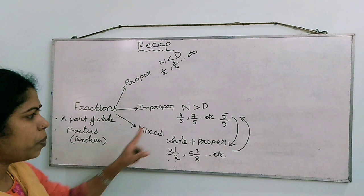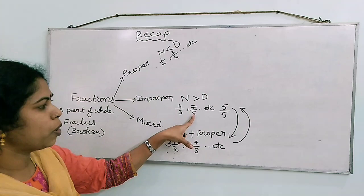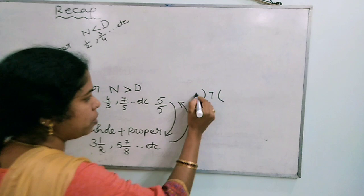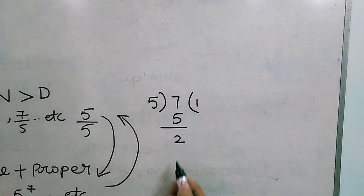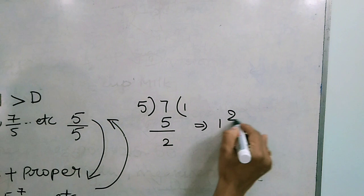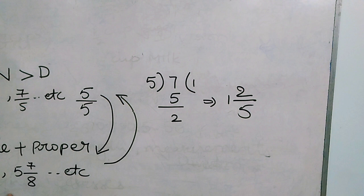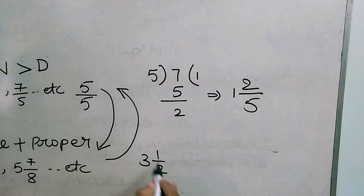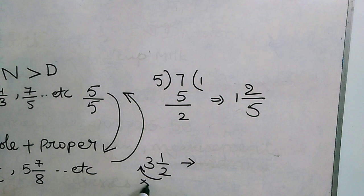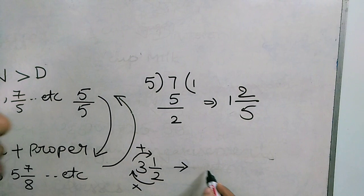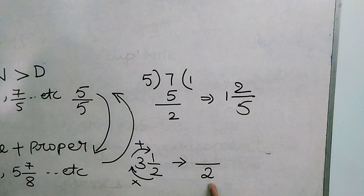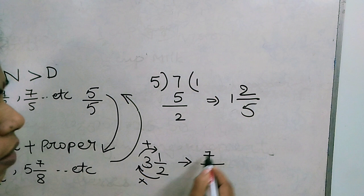Let's see how to express an improper fraction as a mixed fraction. Take 7 by 5 - divide 7 by 5: 5 ones are 5, remainder is 2. So you write this as the mixed fraction 1 and 2 by 5. And how to convert a mixed fraction into an improper fraction? Take 3 and 1 by 2 - multiply the whole number by the denominator: 2 times 3 is 6, then add the numerator: 6 plus 1 is 7. The denominator remains the same, giving 7 by 2. So 3 and 1 by 2 can be expressed as 7 by 2.